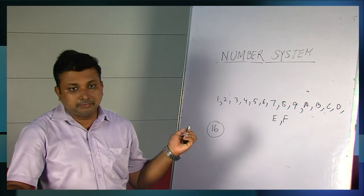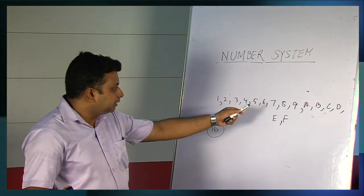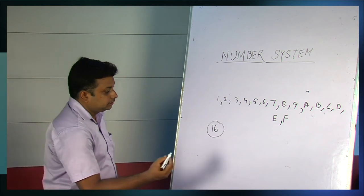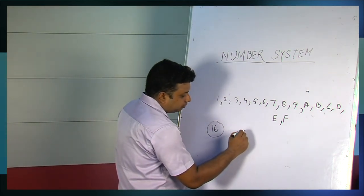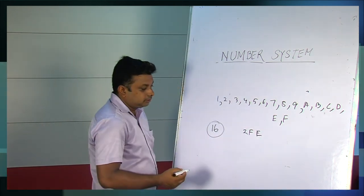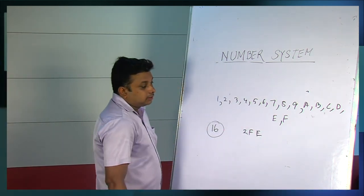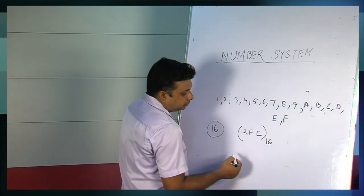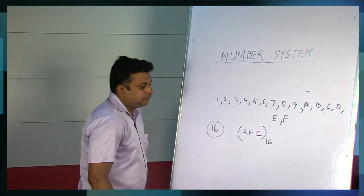Similar way as the previous number system, we can break any hexadecimal number to the decimal ones. So if you find a number 2FE, such type of number, you should definitely understand that this is a hexadecimal number system. And for better precision we write the base here in this way. So till now we have discussed about the four basic number systems. In the next video we are going to discuss about the conversion of this number system, how we can convert decimal to binary or binary to decimal or binary to octal. Everything will be discussed in the next video. Thank you.